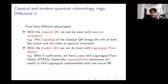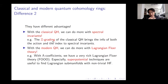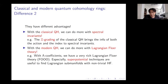The second difference is their different advantages. For working with spectral invariants, the classical quantum cohomology is more convenient because it carries a ℤ-grading, which brings information about the action and index to spectral invariants. On the other hand, for Lagrangian Floer theory, the modern quantum cohomology is more convenient because the universal Novikov field supports nice superpotential theories, which are useful for finding Lagrangian submanifolds with non-trivial Floer homology.